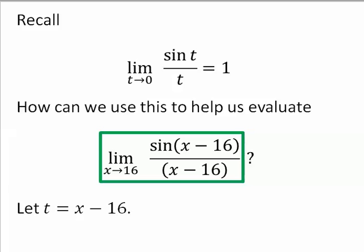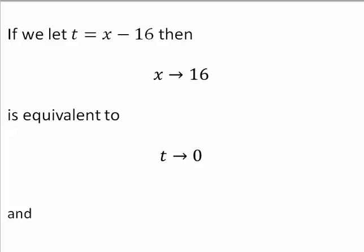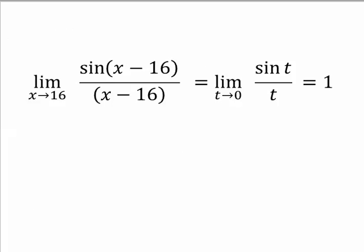Let t be x minus 16. If t is x minus 16, then x going to 16 is equivalent to t going to zero. And we can rewrite the limit in this manner, and that tells us that the limit is equal to 1.